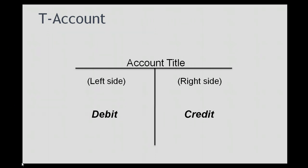There are names for the right side and the left side of your T-account. The left side of your T-account is called a debit. The right side of your T-account is called a credit. The names debit and credit in accounting are just names — debit is the left side and credit is the right side of your T-account.